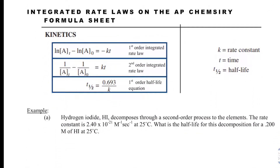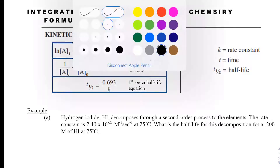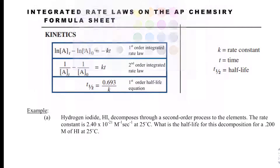If we look at the AP Chemistry formula sheet, they give us these integrated rate law formulas, but they don't tell us what everything means. One way to remember the kinetics section is: it's just 1, 2, 1. And then we'll know exactly what each formula corresponds to.